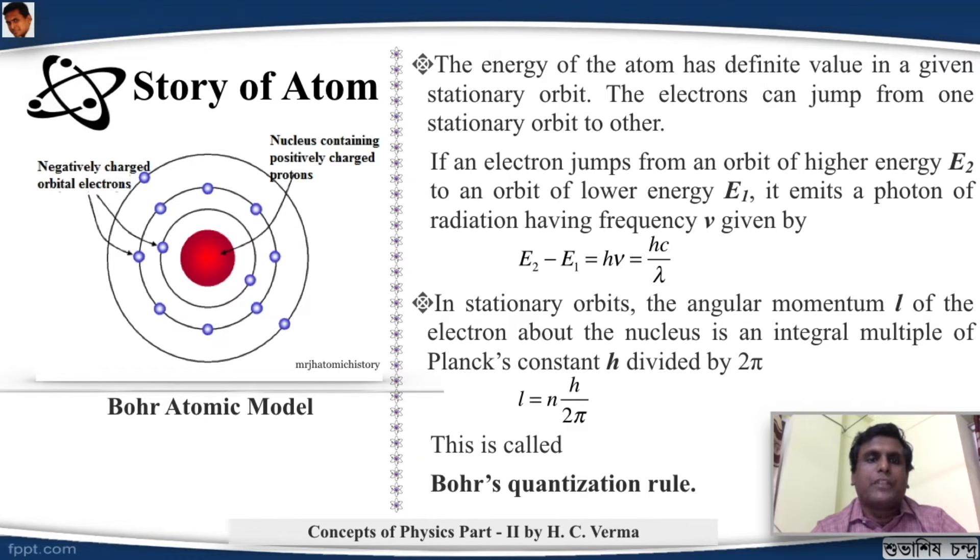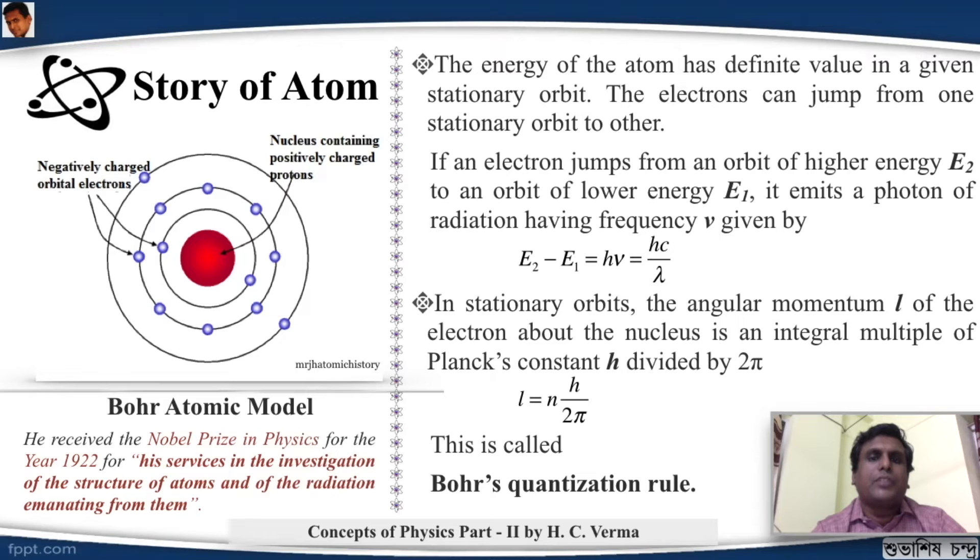Bohr received the Nobel Prize in 1922 for his services in the investigation of the structure of atoms and of the radiation emanating from them. Bohr was such an important person that when the World War II started, he was one of the first to be evacuated from Copenhagen. He was also one of the chief architects of the nuclear bomb or the project as it is popularly known as the Manhattan Project.